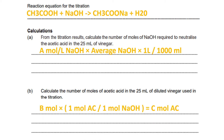Then calculate the number of moles of acetic acid in 25 ml of diluted vinegar used in the titration. This is calculated using: moles of NaOH × (1 mol acetic acid / 1 mol NaOH), which gives you the moles of acetic acid in 25 ml of solution. We know the mole ratio is 1 to 1, meaning 1 mole of acetic acid is completely consumed when reacted with sodium hydroxide.